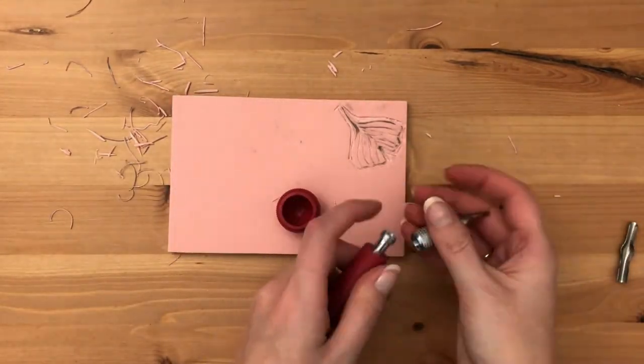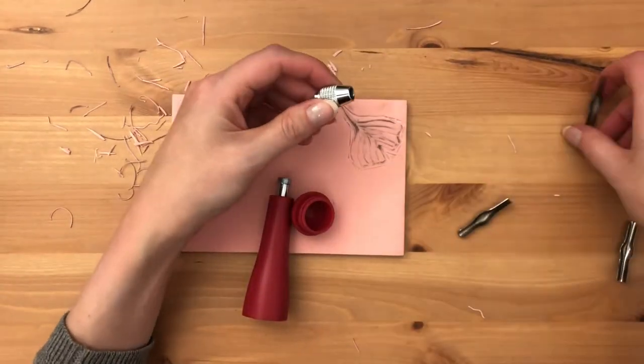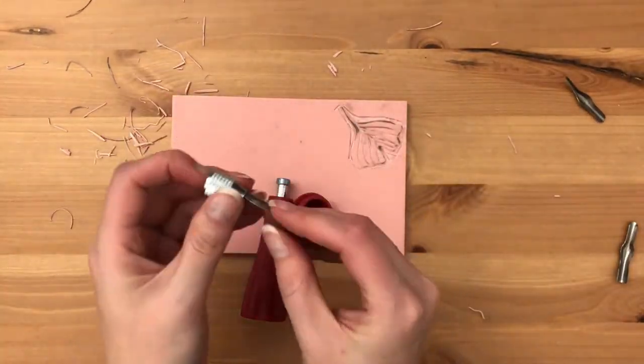Next I'm going to move up to the larger v-shaped carving nib. I'm just going to try to get a bit more of the excess off around the outside.